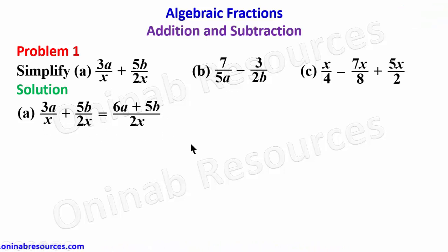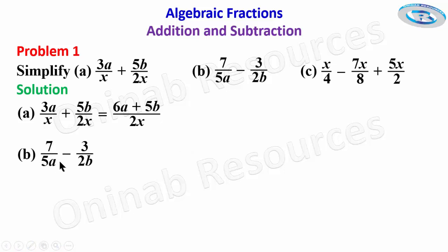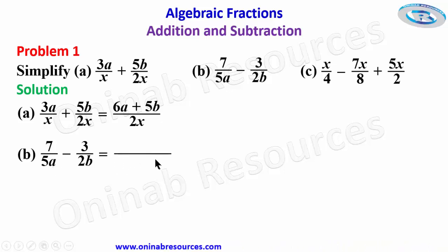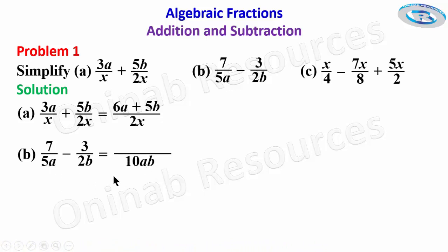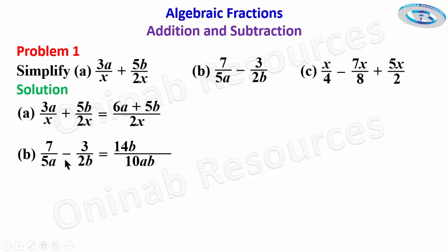We go to part (b) of the problem. For (b) we have 7 over 5a minus 3 over 2b. We find the LCM of 5a and 2b, which gives us 10ab. 10ab divided by 5a gives 2b; 2b times 7 gives 14b. 10ab divided by 2b gives 5a; 5a times 3 gives 15a. So we have 14b minus 15a over 10ab, and there's no way to simplify this further.